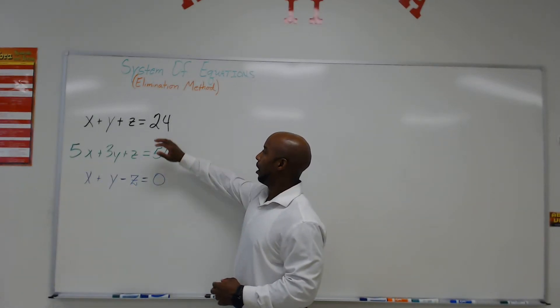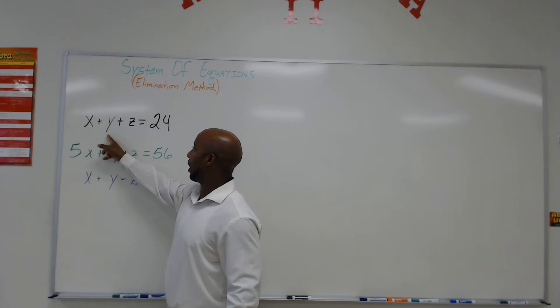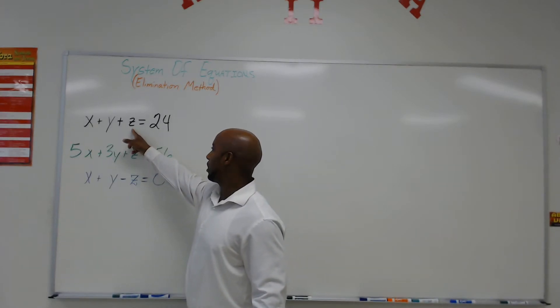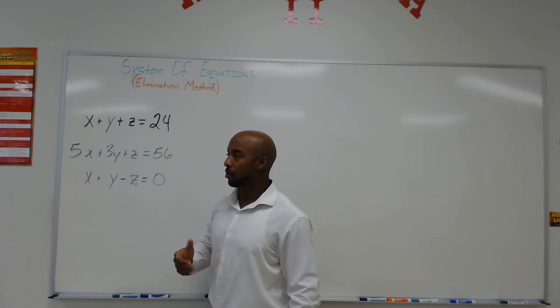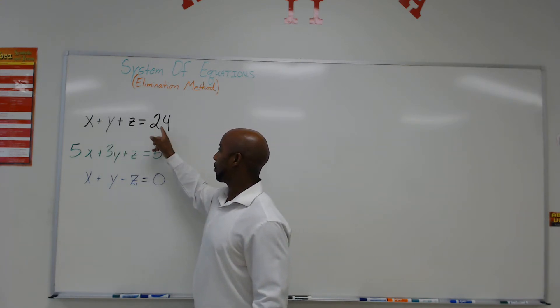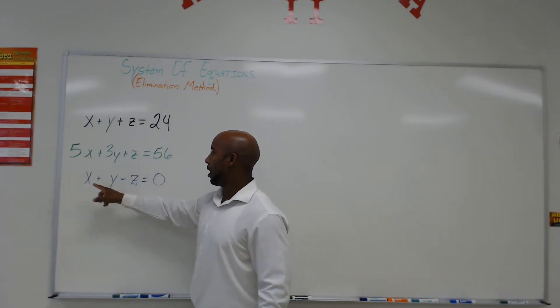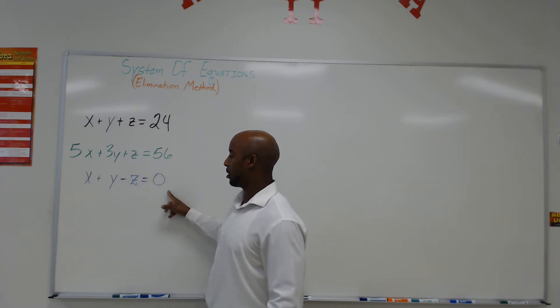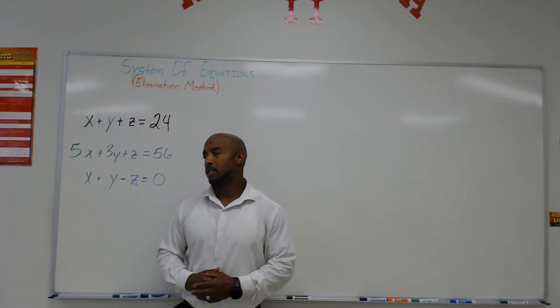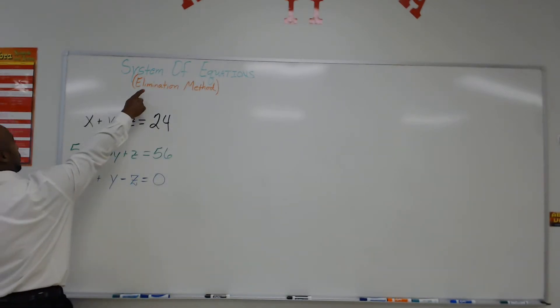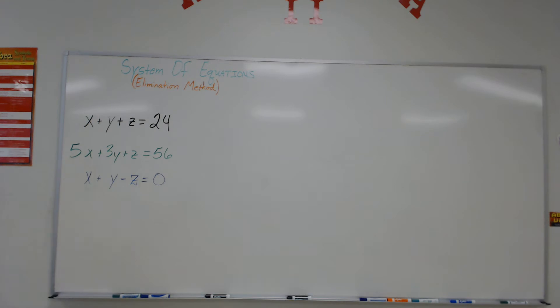Here we have two equations. My first equation is x plus y plus z — I'll put a little line through my z so you know that it's a z and not the number 2 — so x plus y plus z is equal to 24. 5x plus 3y plus z is equal to 56. And x plus y minus z is equal to 0. We are talking about using the elimination method. In this method, we're not trying to substitute anything out; instead, we want to eliminate variables.